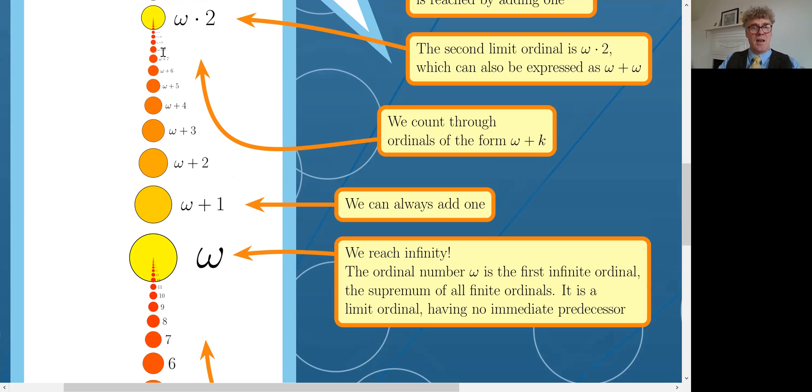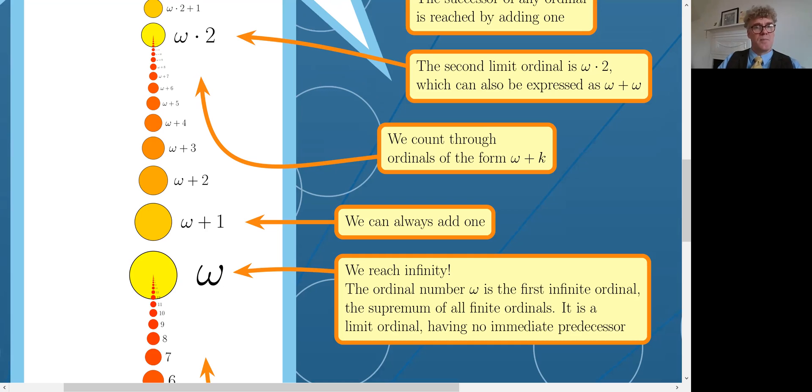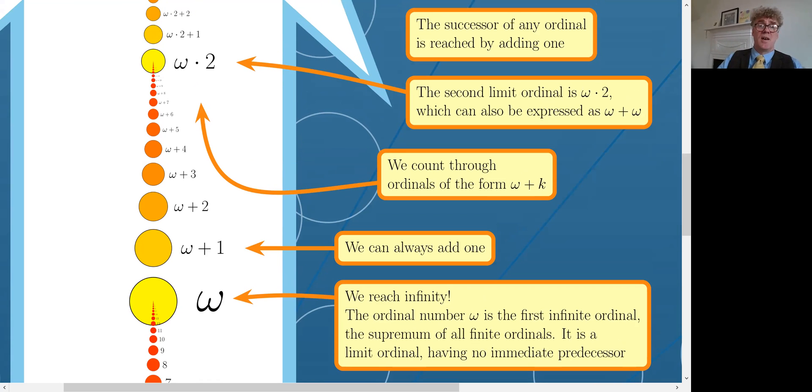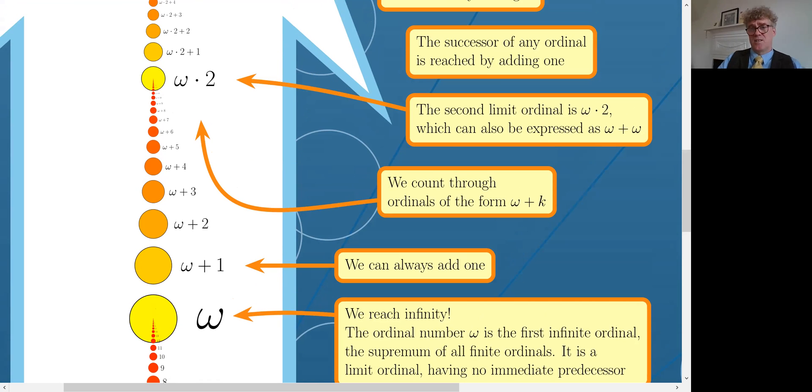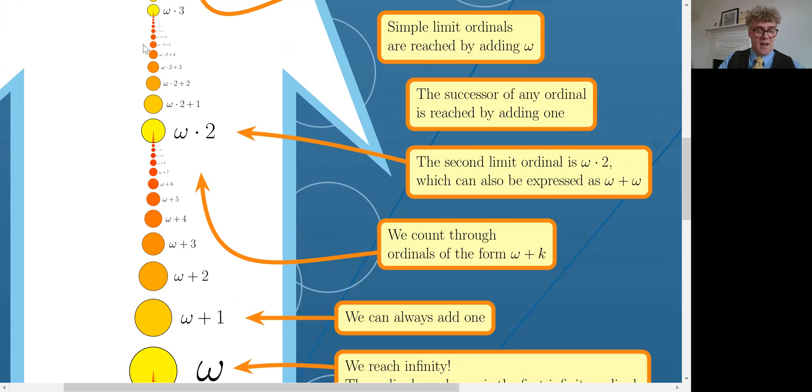This is the second limit ordinal and it can also be expressed as omega plus omega. But what did I say? You can always add one so we can make the ordinal number omega times two plus one and omega times two plus two and omega times two plus three and so on. And in that way, we'll reach the third limit ordinal omega times three.